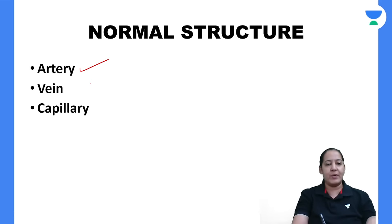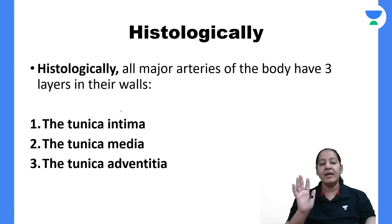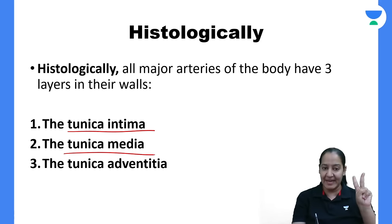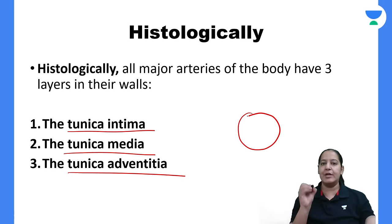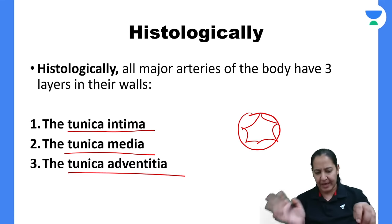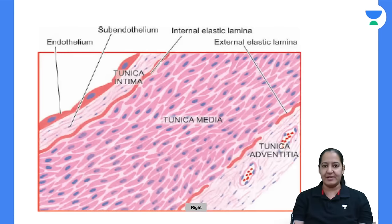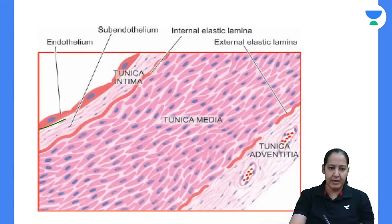In the human body, three types of blood vessels are present: arteries, veins, and capillaries. Arteries are thick-walled and veins are thin-walled. In the structure of the artery, three layers are present: the innermost layer is the tunica intima, the middle layer is the tunica media, and the outermost layer is the tunica adventitia.